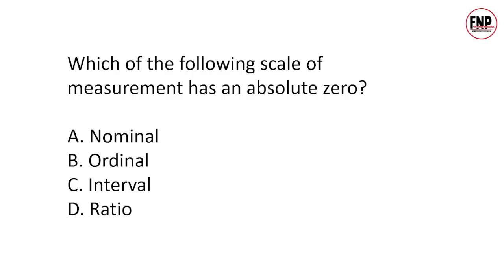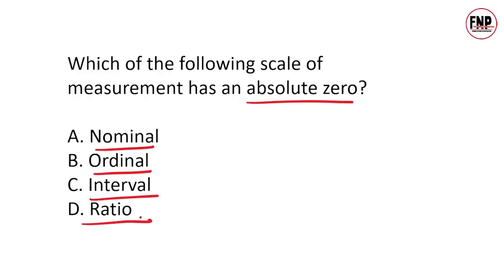Question 7: Which of the following scales of measurement has an absolute zero? Options: Nominal, Ordinal, Interval, Ratio. The correct answer is Option D — Ratio। Ratio वह measuring scale है जिसका absolute zero होता है।